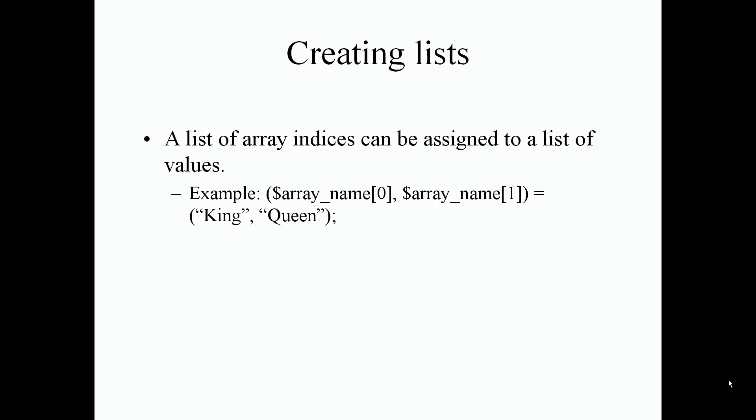A list is essentially an array where indices can be assigned to a list of values. We can set up individual variables in a list and have them assigned to specific values, instead of declaring an array and assigning all values at once. We can just select specific values from an array and assign them to the values in a list.